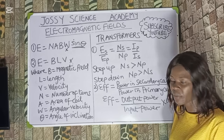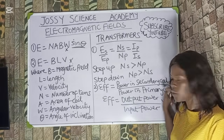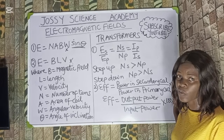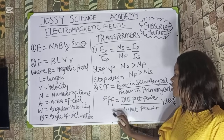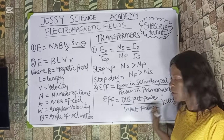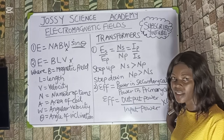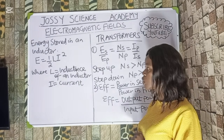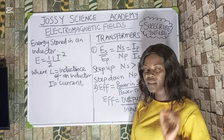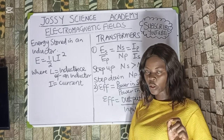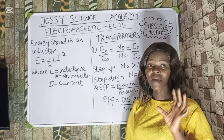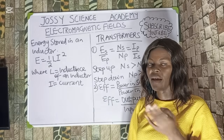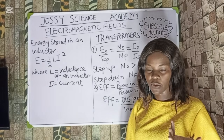The efficiency of a transformer equals the power in the secondary coil over the power in the primary coil, multiplied by 100%. Efficiency is also equal to output power over input power multiplied by 100%. Lastly, the energy stored in an inductor equals ½LI², where L is the inductance and I is the current. For inductors connected in series, simply add their values, then square the current and multiply by half.